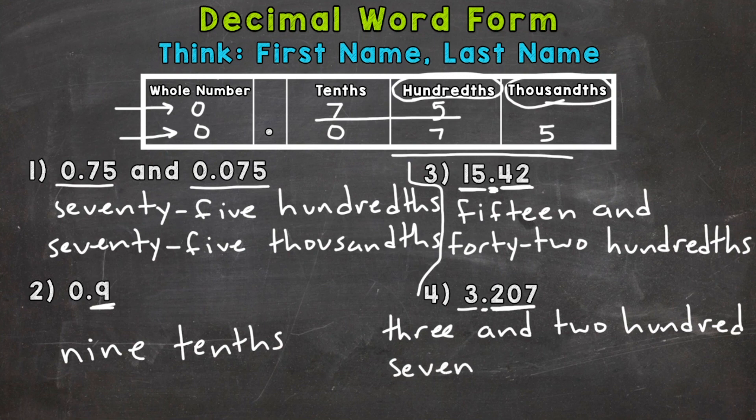And the last name is where that decimal ends. So what place does that seven sit in? Well, it ends in the thousandths. So let's wrap up number three here. With thousandths. So we would read that number three and 207 thousandths.